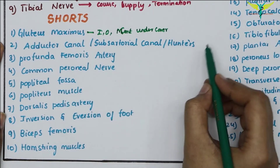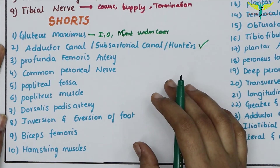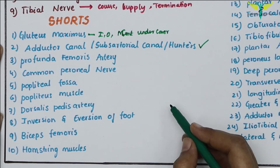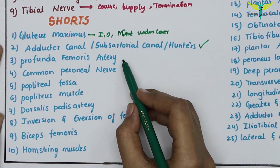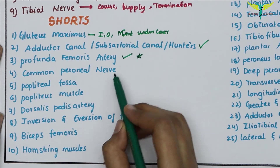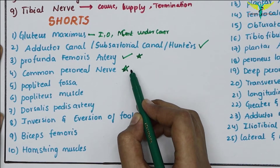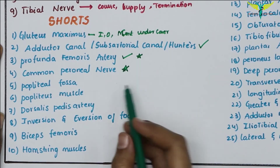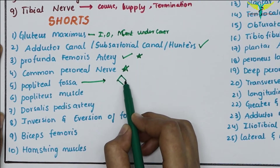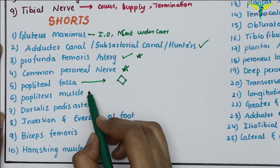The profunda femoris artery, a branch of the femoral artery, is very important. The common peroneal nerve, a branch of the sciatic nerve, is very important in shorts. The popliteal fossa may be asked in brief — its boundaries, muscles involved, and contents. The popliteus muscle is important for four-mark short questions.